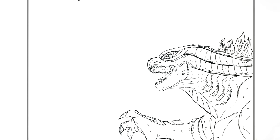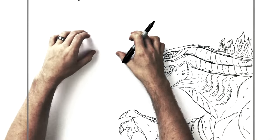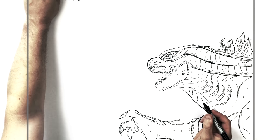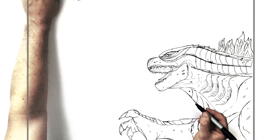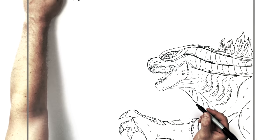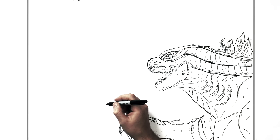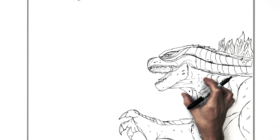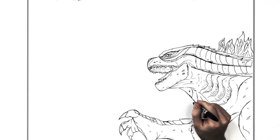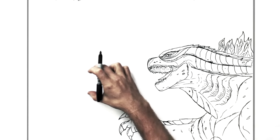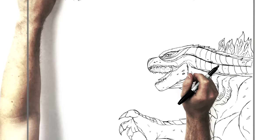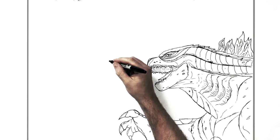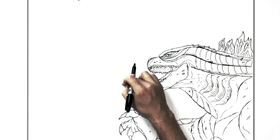Now Ghidorah — three heads, right? One, two, three. We'll start with the middle one just so we don't go too high. We'll get the middle head in — he's just kind of right across from Godzilla's chin.